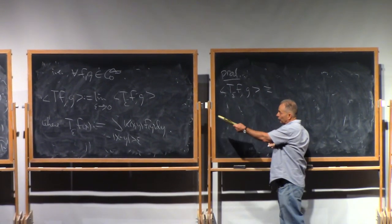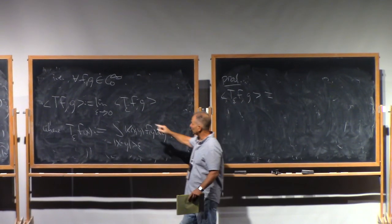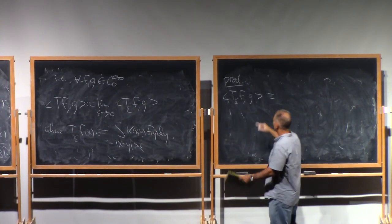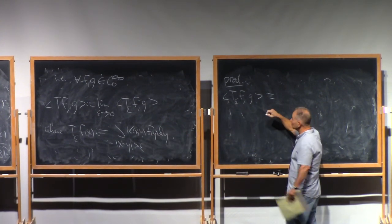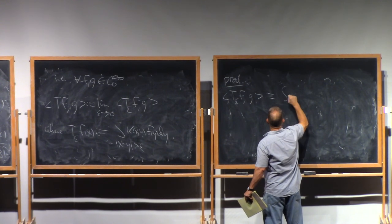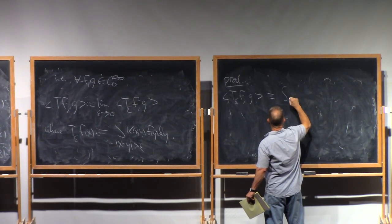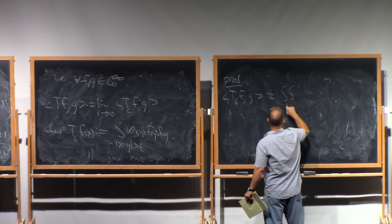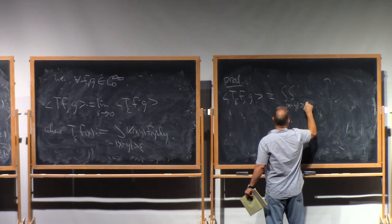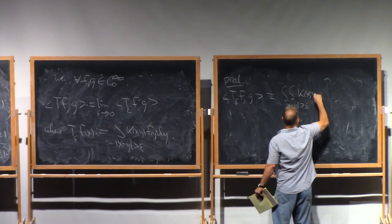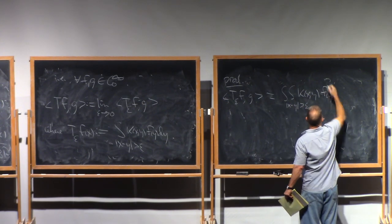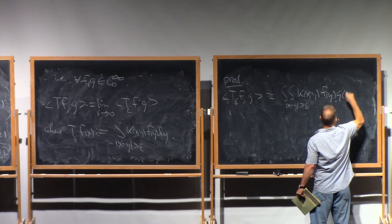Because for these truncated singular integrals we have absolute convergence, we can actually write this as an explicit integral. So this will be the integral of the double integral integrating where X minus Y is bigger than epsilon of K of X Y F of Y G of X.